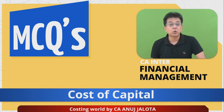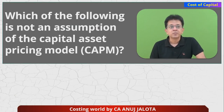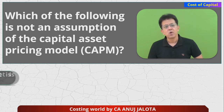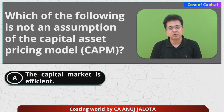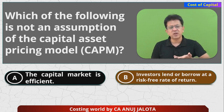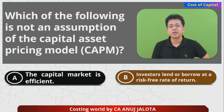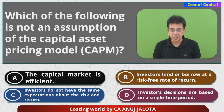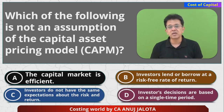Today's question is about Cost of Capital. The question is: which of the following is NOT an assumption under the CAPM model? CAPM stands for Capital Asset Pricing Model. The four options are: A) Capital markets are efficient; B) Investors lend or borrow at a risk-free rate of return; C) Investors do not have the same expectations about risk and returns; D) Investors' decisions are based on a single time period.